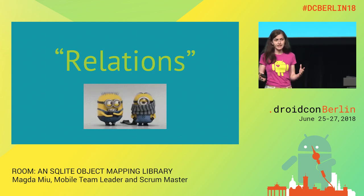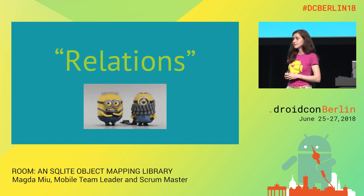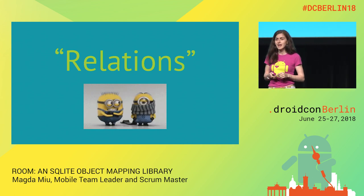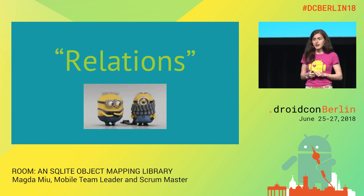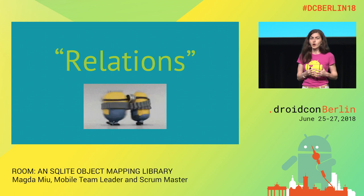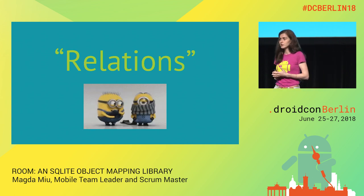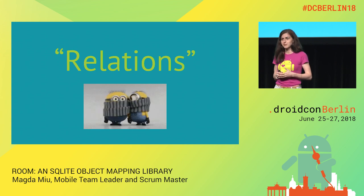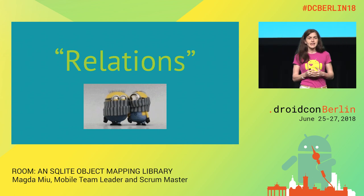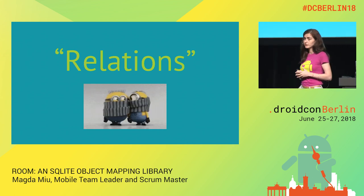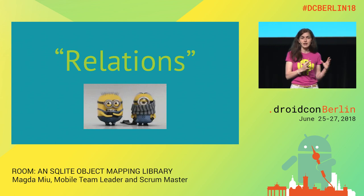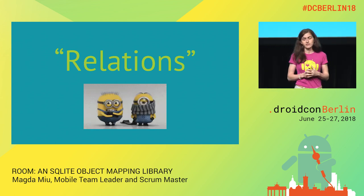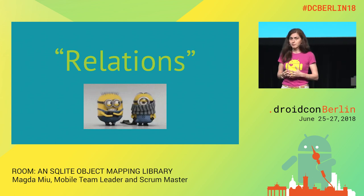SQLite is a relational database, so it understands relations between entities. But I use quotes around 'relations' because in Room, entities cannot contain other entities. When using a relational database like SQLite from an object-oriented language like Java or Kotlin, you've likely read about object-relational impedance mismatch — a fancy way of saying it's difficult getting stuff into and out of the database. The purpose of an ORM is to solve this issue. Room also tries to solve it, but let's see why Google decided not to allow entities inside other entities.